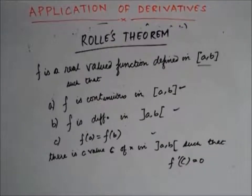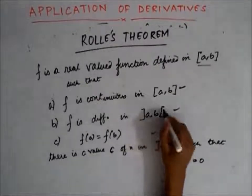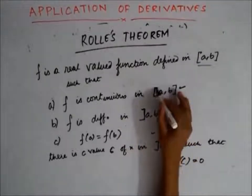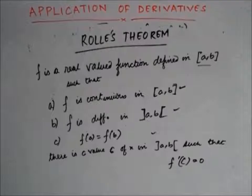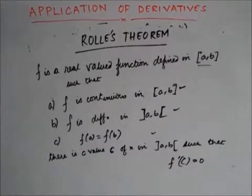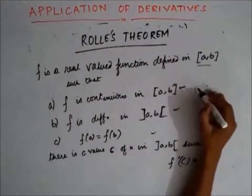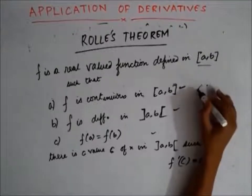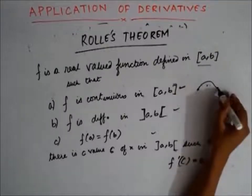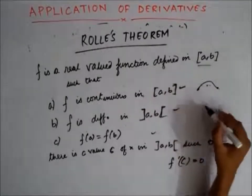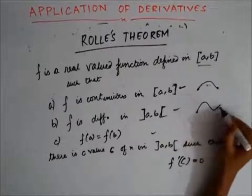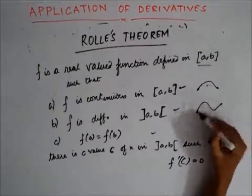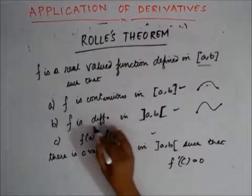The first doubt is: why do we take the open interval for differentiability and the closed interval for continuity? The reason is that whenever we talk of continuity we take the closed interval because we can judge the continuity of a curve at the end points also. But whenever we have a curve, we cannot check for differentiability at the end points, so we exclude the end points when we talk of differentiability.